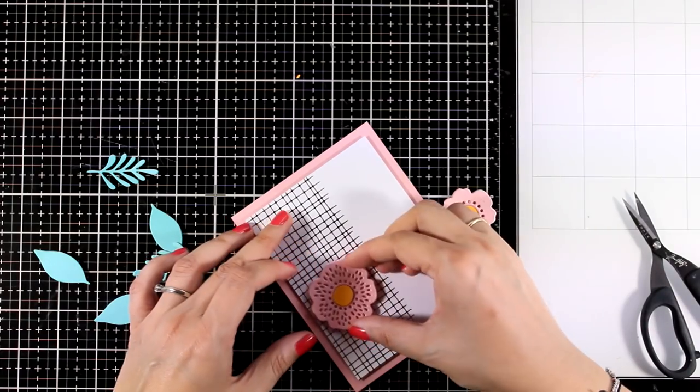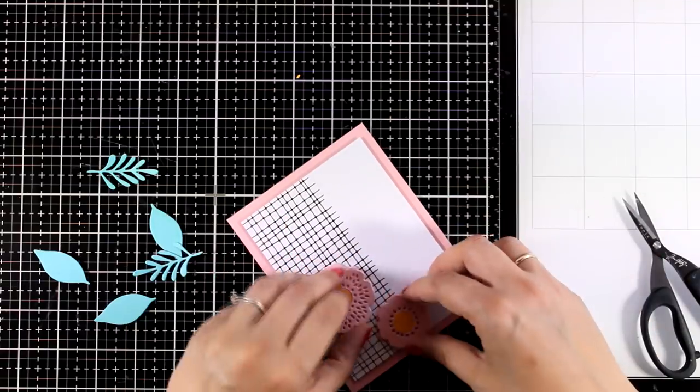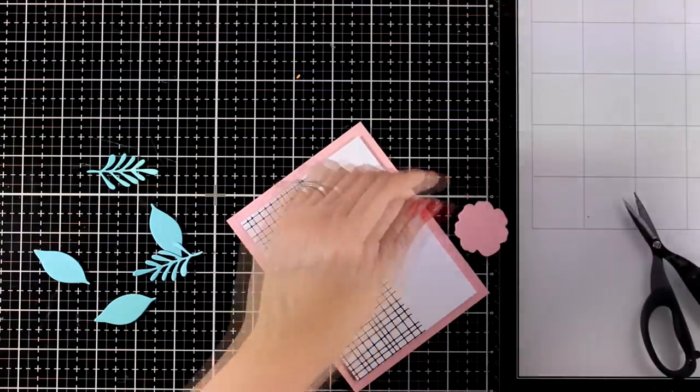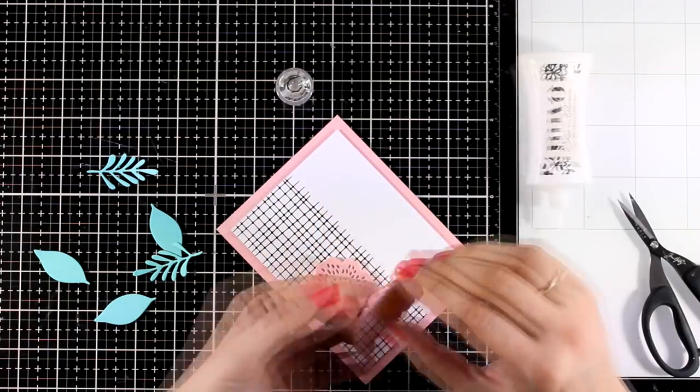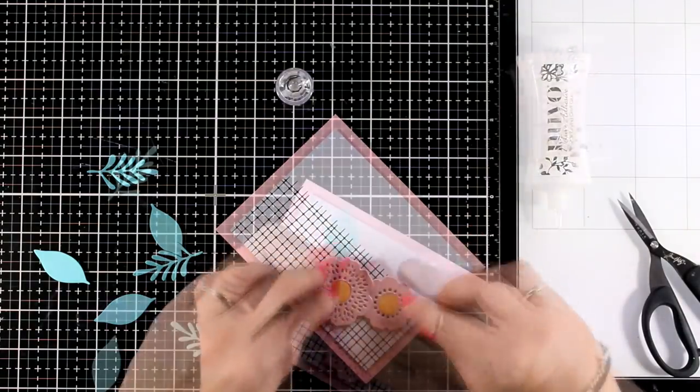Now for one of the flowers I'm going with foam tape in the back and pop it on top of my card. For the other one I'm going to go flat so that I can tuck it underneath the bigger one. I'm going to tuck underneath the leaves as well.